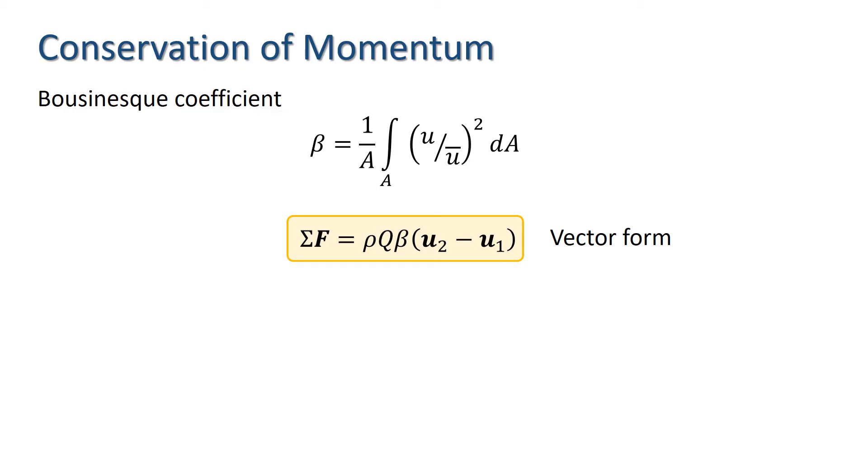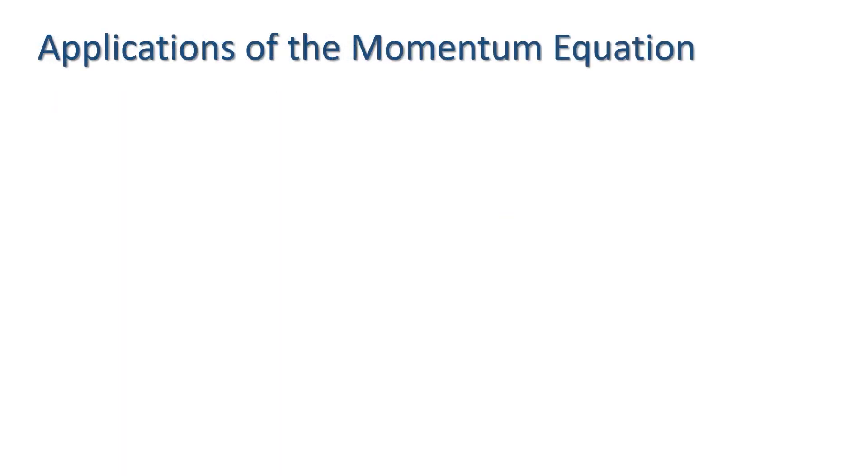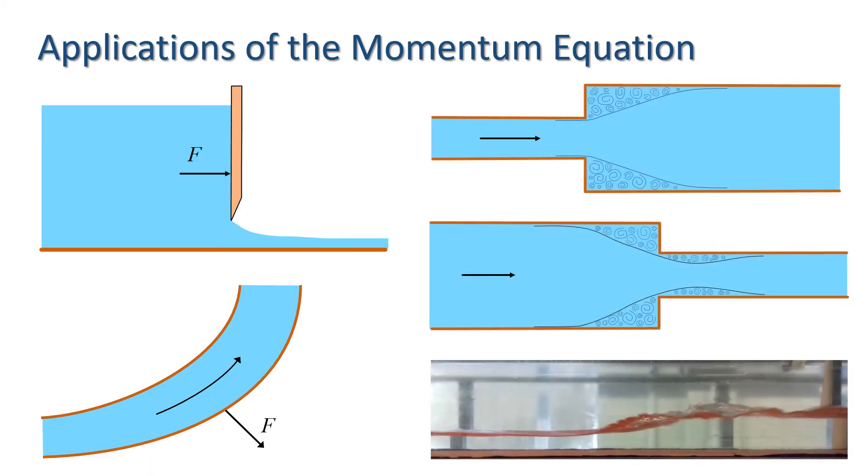I usually write the momentum equation in the form shown here as it makes it easier to get the signs right. Applications of the momentum equation include calculating forces exerted by flowing water on structures such as walls, gates and bends in pipes and calculating energy losses at sudden transitions such as an expansion or contraction of a pipe area or a hydraulic jump.